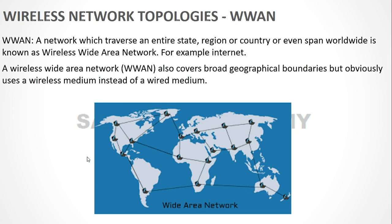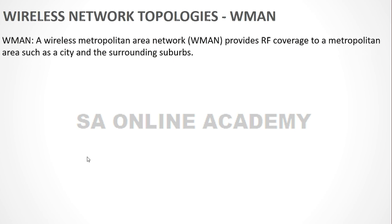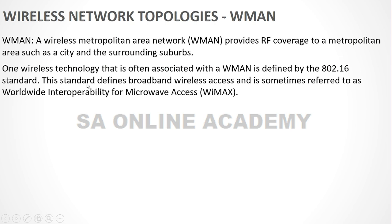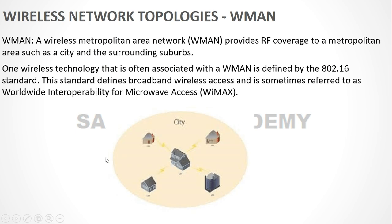The next type is WMAN — Wireless Metropolitan Area Network. When your network covers a wider area but not as wide as a WWAN, such as a city or suburb, it is known as a WMAN. One wireless technology associated with WMAN is defined by the 802.16 standard, which defines broadband wireless access, sometimes referred to as WiMAX — Worldwide Interoperability for Microwave Access. WiMAX and WMAN are interchangeably used terminologies.